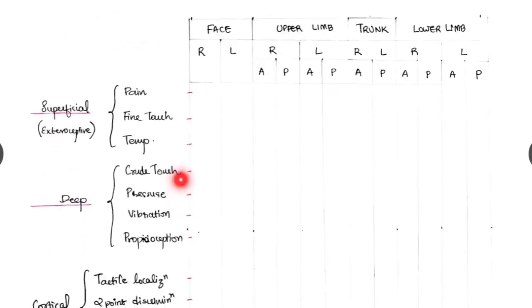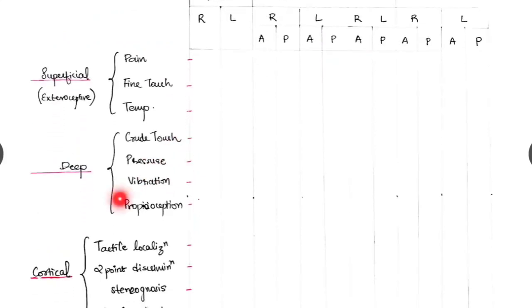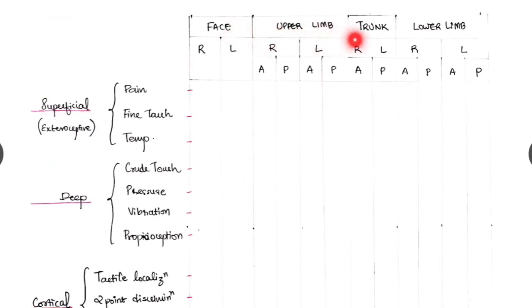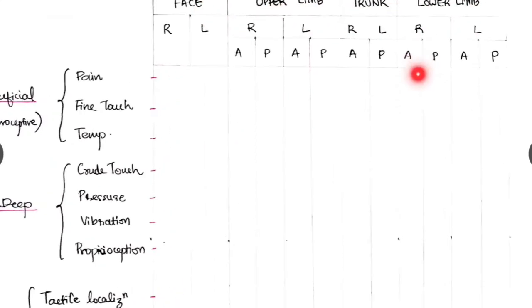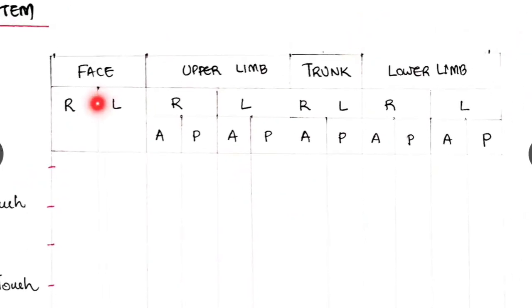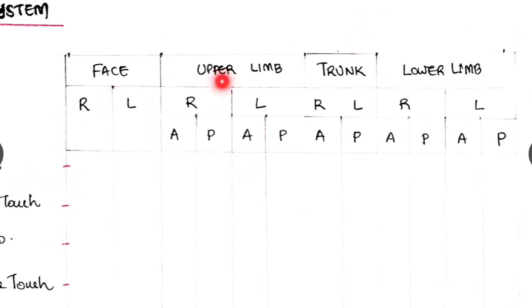Next is the sensory system. We have to look for the superficial, deep and cortical sensations in the face, upper limb, trunk and the lower limb. And we have to neatly tabulate like this: face in the right and left, trunk right and left and anterior and posterior.